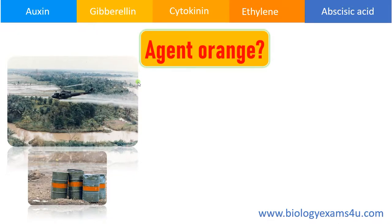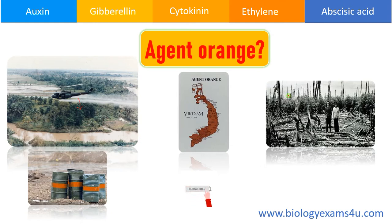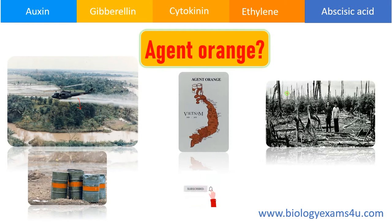Do you know that Agent Orange, the toxic herbicide widely used by the US military during the Vietnam War, is a synthetic plant hormone? Agent Orange was sprayed using helicopters in Vietnam forests to uncover soldiers and also to cause crop loss. The drastic effects of this disastrous chemical still persist as long-term illness, birth defects, cancers, etc. Agent Orange is made up of two synthetic auxins: 2,4-dichlorophenoxyacetic acid and 2,4,5-trichlorophenoxyacetic acid.